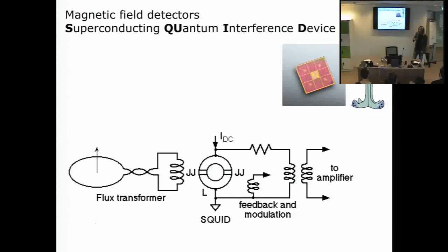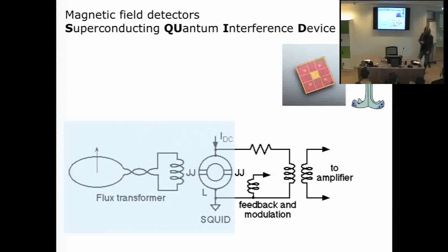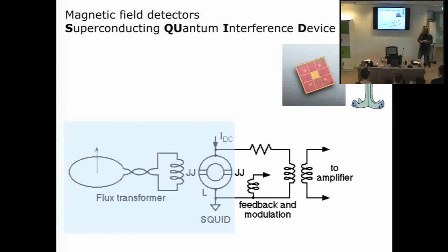This makes MEG a relatively complex setup, because everything up to the SQUID must be kept at superconducting temperatures in a bath of liquid helium, plus a whole rack of electronics for the feedback mechanism. Whereas an EEG amplifier is basically a small box, an MEG system is a full rack of electronics.